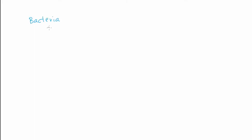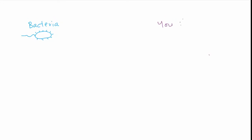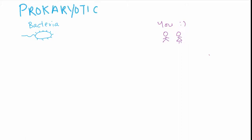All living things are made up of cells. This includes single-celled organisms like bacteria as well as multicellular organisms like you. The simple cells which evolved first are called prokaryotic cells.